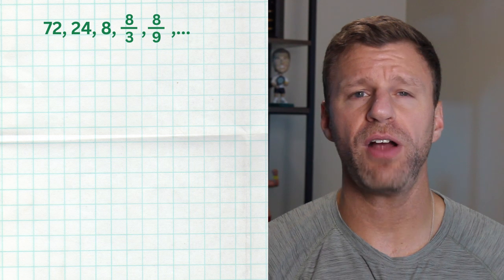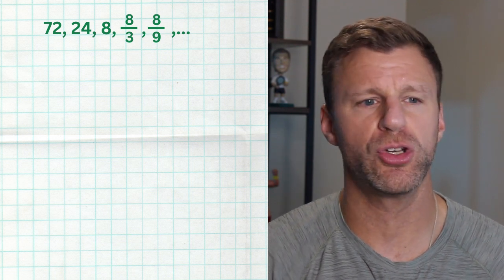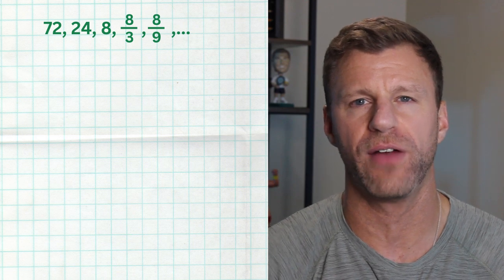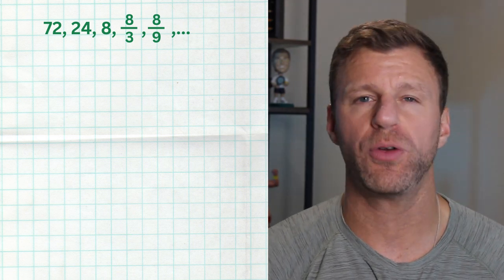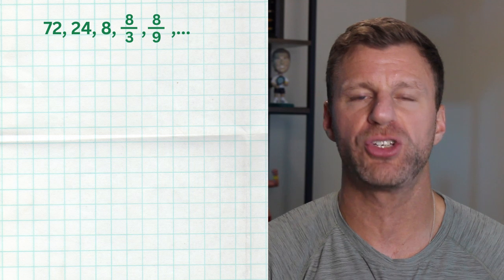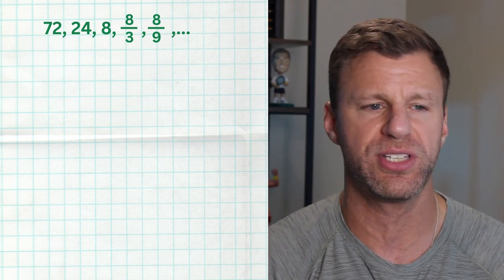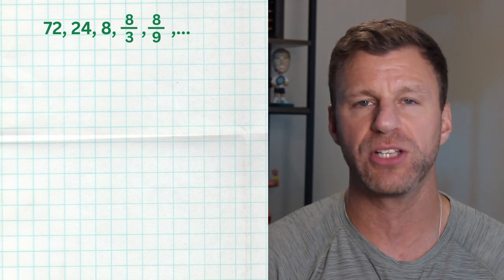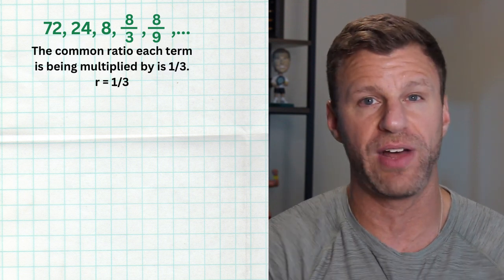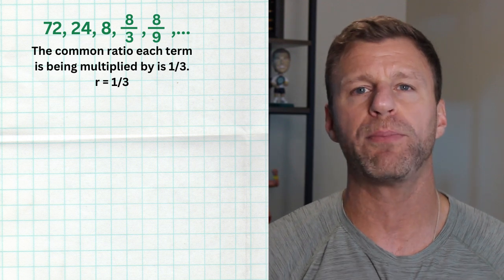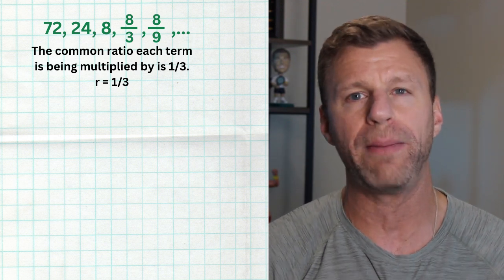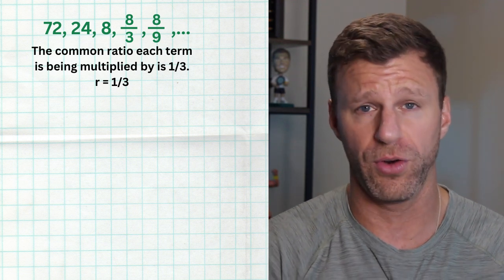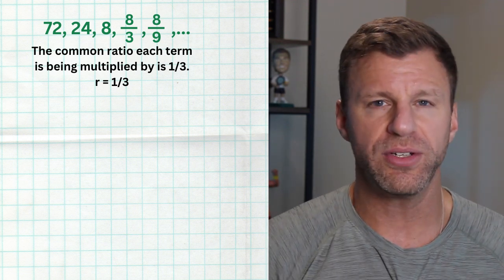Let's look at another example: 72, 24, 8, 8/3, 8/9, and so on. First, find the common ratio: 24 divided by 72 is 1/3, 8 divided by 24 is 1/3, (8/3) divided by 8 is 1/3. So this time we're multiplying by 1/3, meaning the sequence gets smaller — but we're still multiplying by the same value every time.